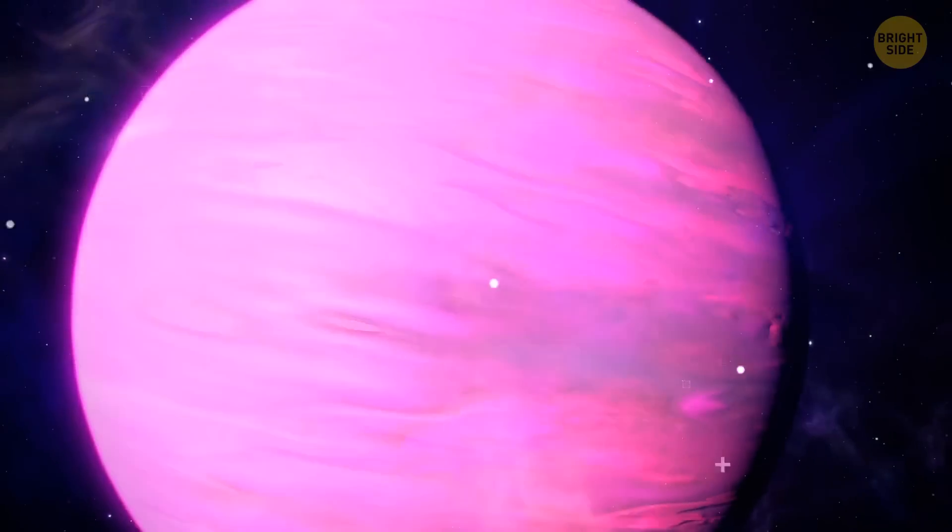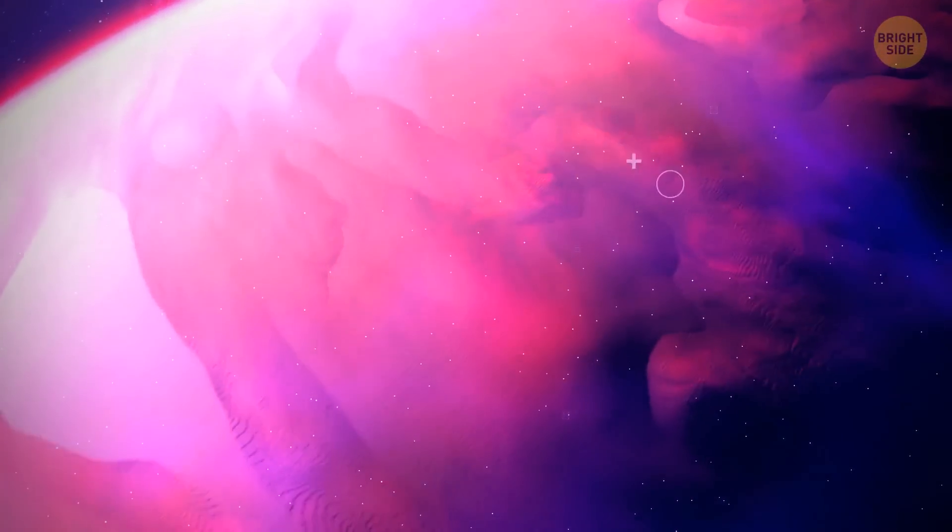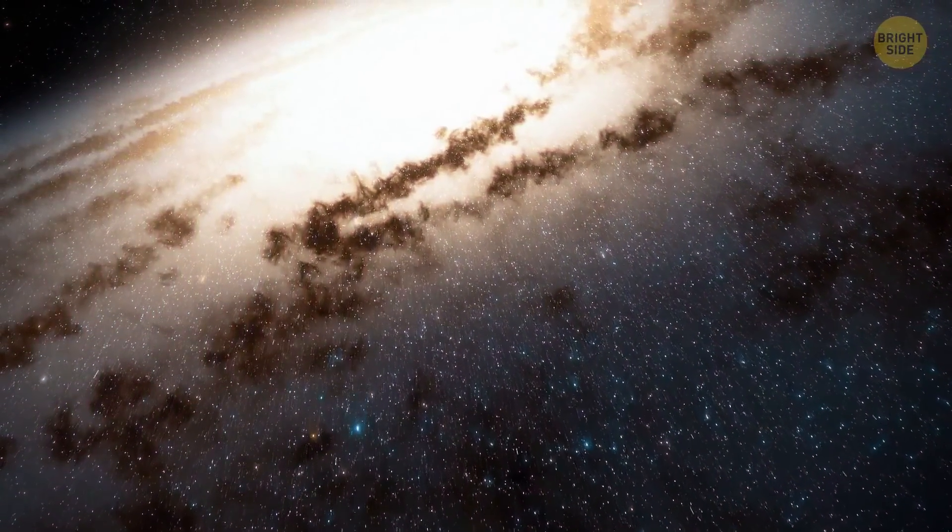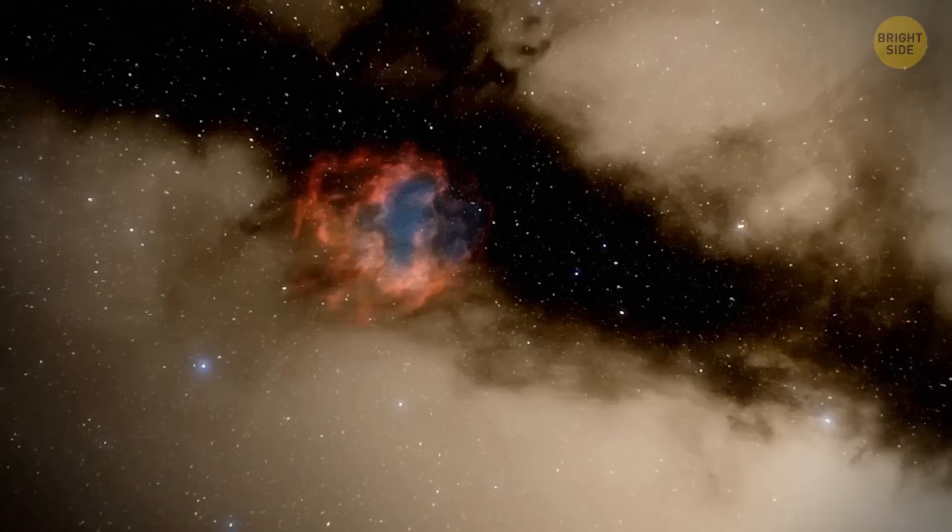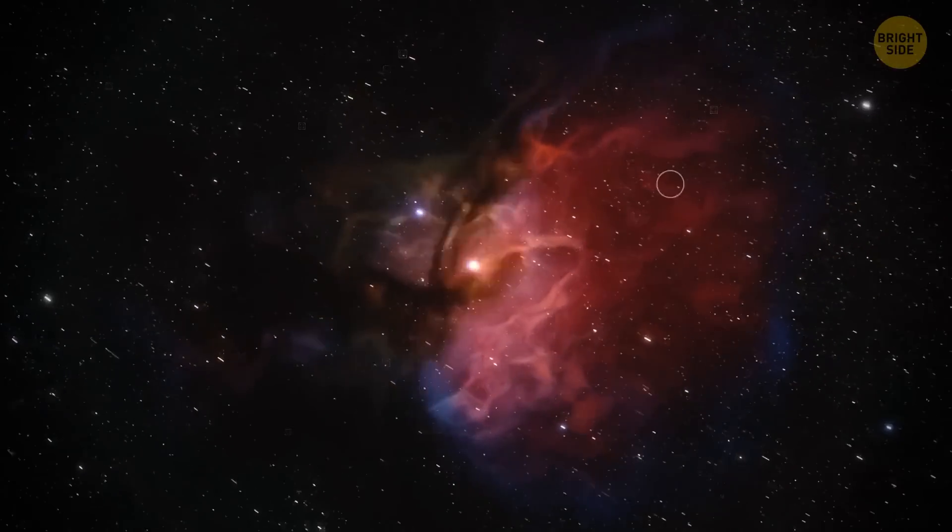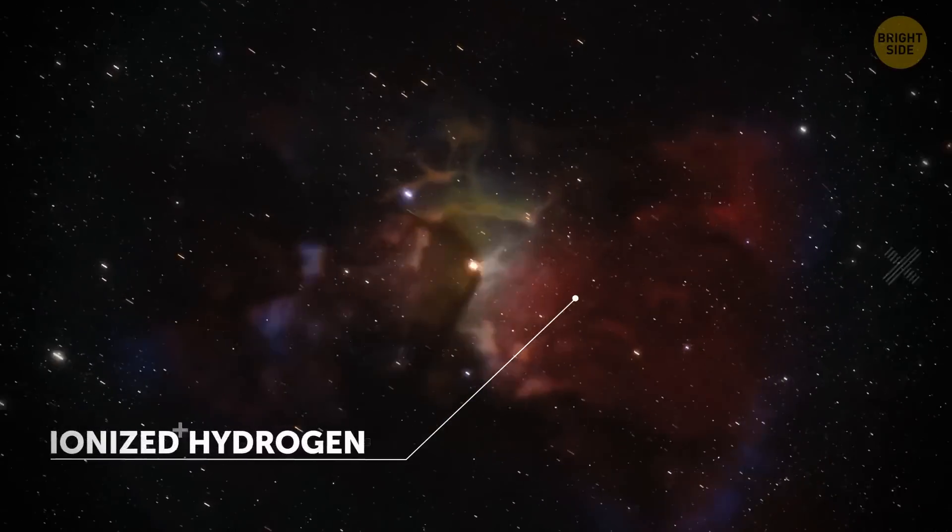When you heat something up, it radiates that energy away in a certain way. In most cases, galaxies have just a couple of areas where stars are forming, at regions where gas is collapsing. A bubble that surrounds that area contains ionized hydrogen.